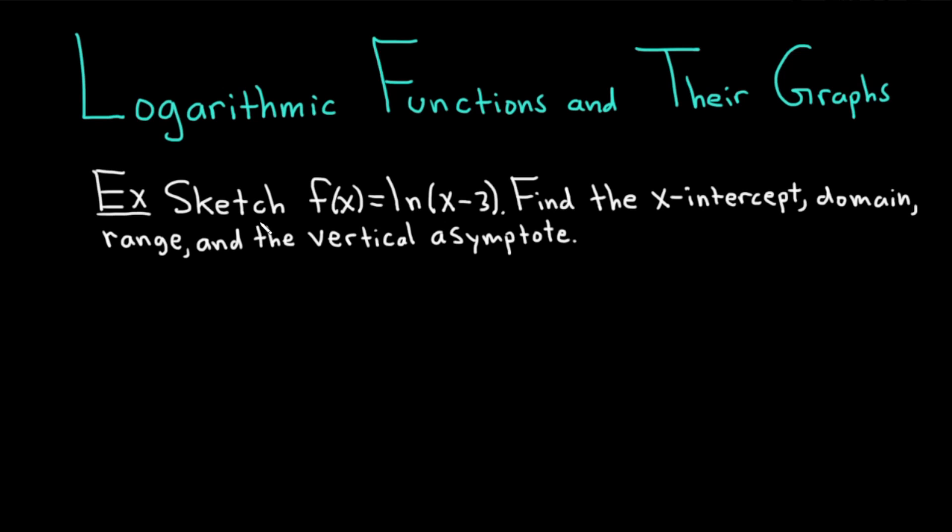Let's start by doing an example where we sketch a logarithmic function. We have f of x equals the natural log of x minus 3, and we're also going to find the x-intercept, the domain, the range, and the vertical asymptote.